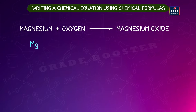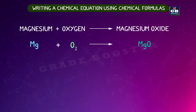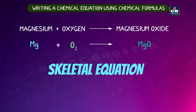Using chemical formulas: Mg plus O₂ gives rise to MgO. Here the number of atoms on the left-hand side and right-hand side are not equal, meaning this is an unbalanced equation. Such equations are called skeletal equations.